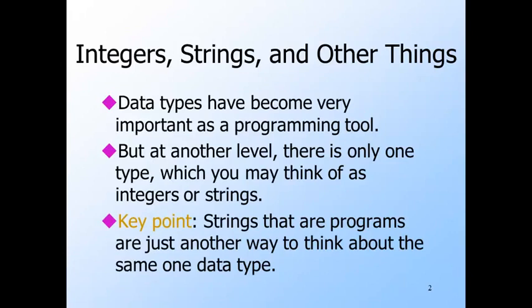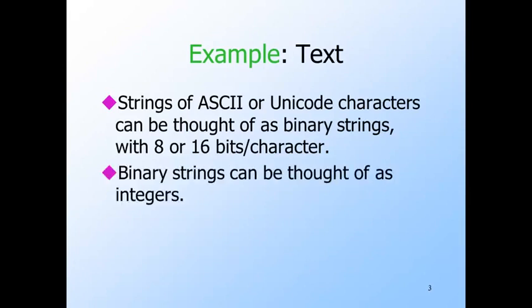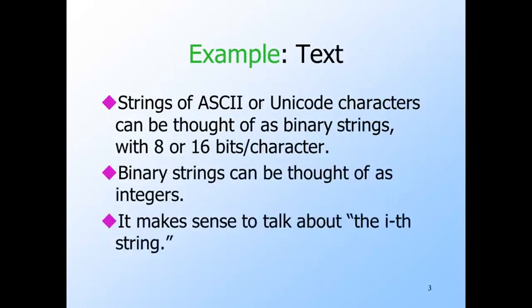That lets us talk about the hundredth program and things like that. As we shall see, the fact that programs and data are at heart the same thing is what lets us build a powerful theory about what is not computable. As a simple example, strings of ASCII characters can be thought of as binary strings — eight bits to a character, or 16 bits per character for Unicode. Strings in any alphabet can be represented by binary strings, and binary strings are really integers. Thus it makes sense to talk about the i-th string for any i.